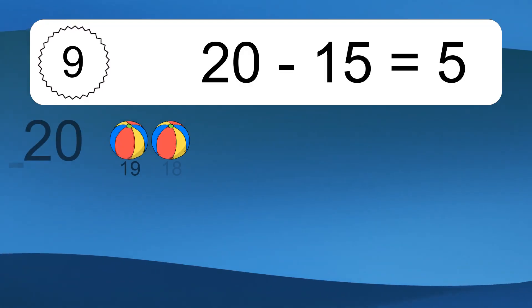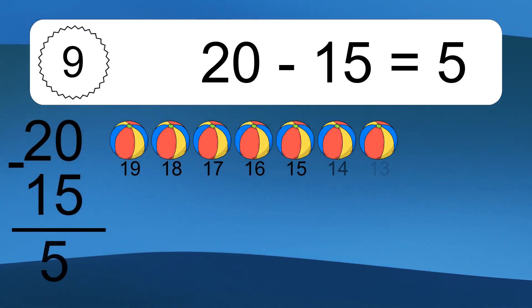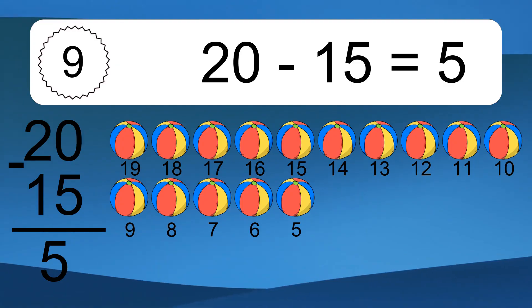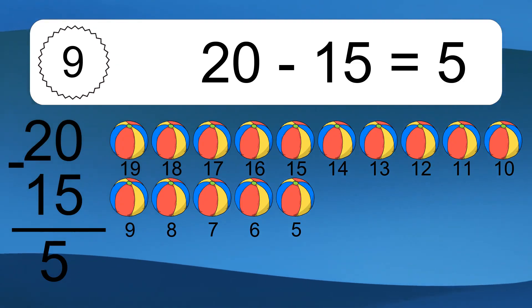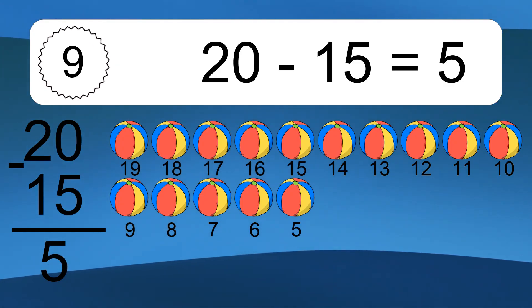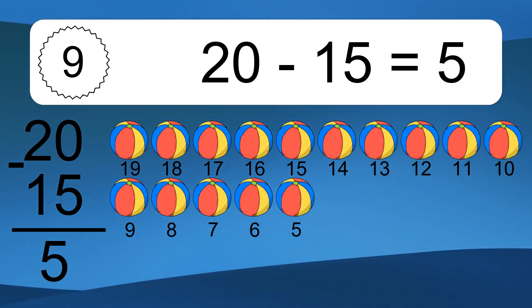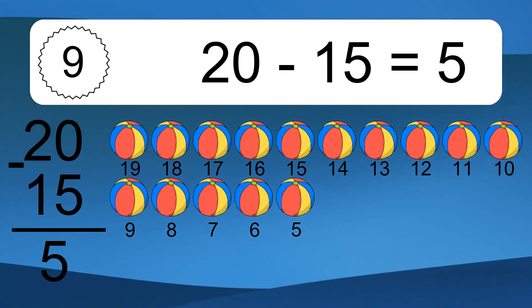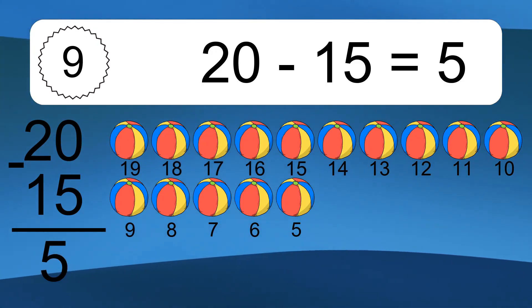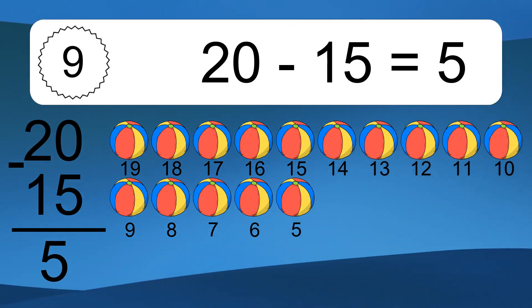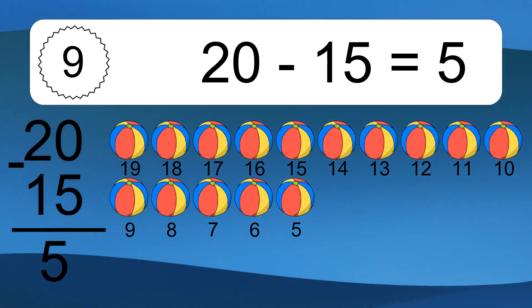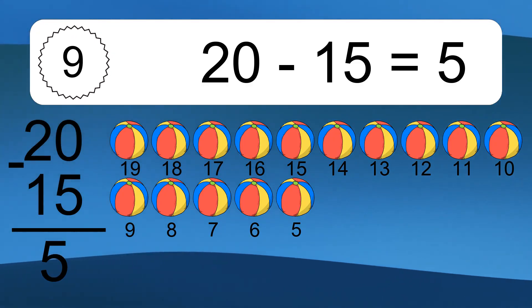20 minus 15 equals 5. Let's count it: 19, 18, 17, 16, 15, 14, 13, 12, 11, 10, 9, 8, 7, 6, 5.